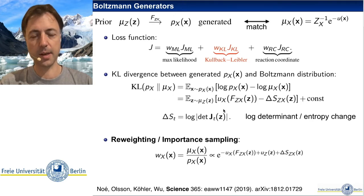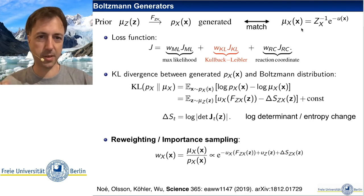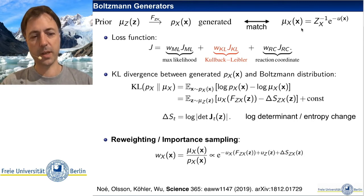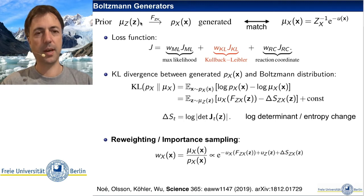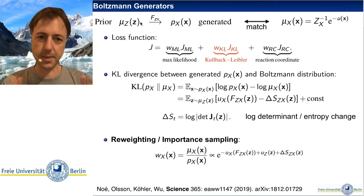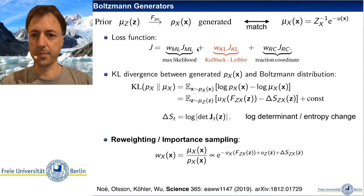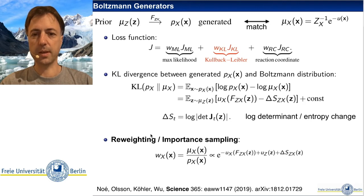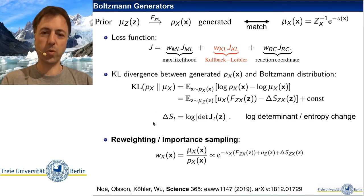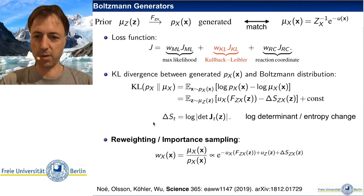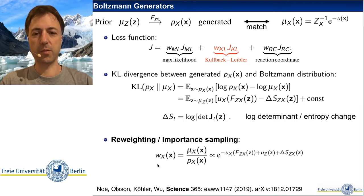We can also do the same thing the other way around. If we have samples available in x — for example, some MD samples in different relevant states — we can transform back through our flow to the z variables and minimize the Kullback-Leibler divergence to the Gaussian distribution there, which is equivalent to maximum likelihood training. Finally, once we have trained the flow as a Boltzmann generator, we can turn the flow into a proper Boltzmann generator by using it to generate samples and then resampling using Markov chain Monte Carlo, in order to generate samples from our target Boltzmann distribution.